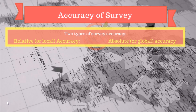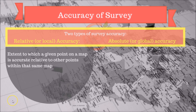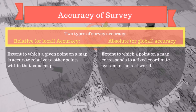Relative or local accuracy is the extent to which a given point on a map is accurate relative to other points within the same map. Whereas absolute or global accuracy is the extent to which a point on a map corresponds to a fixed coordinate system in the real world.